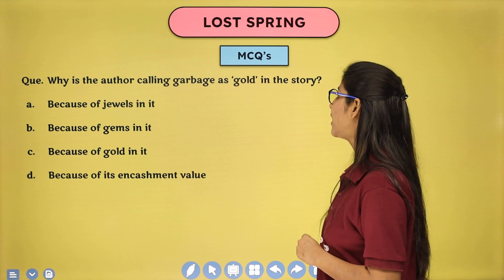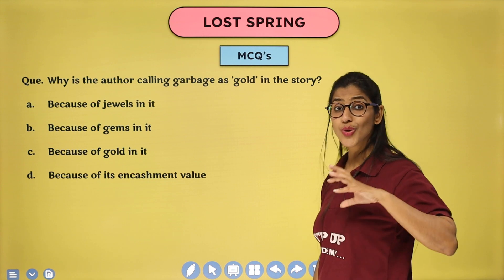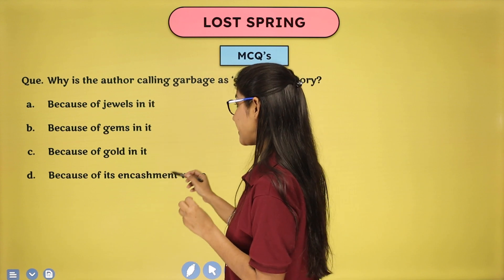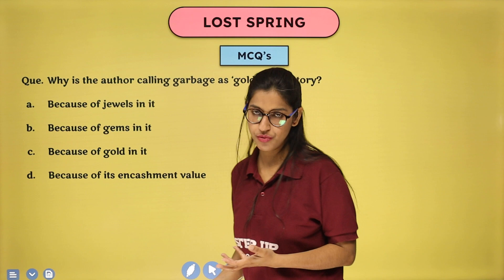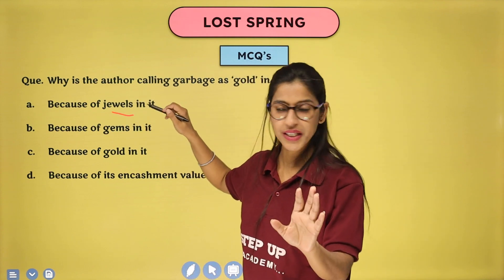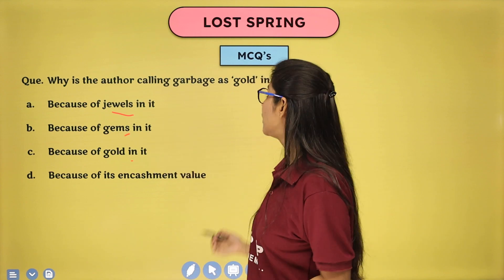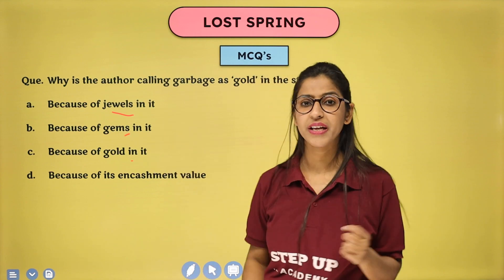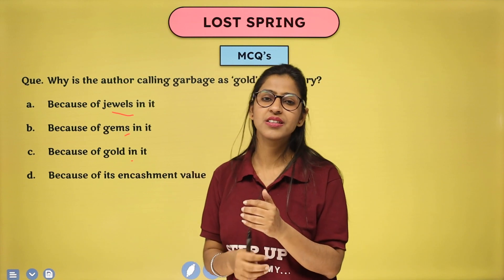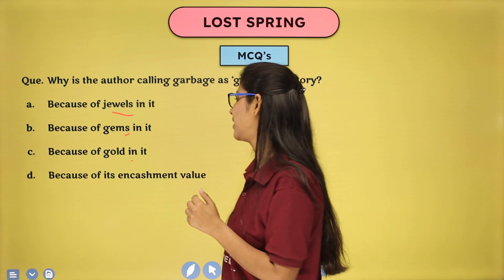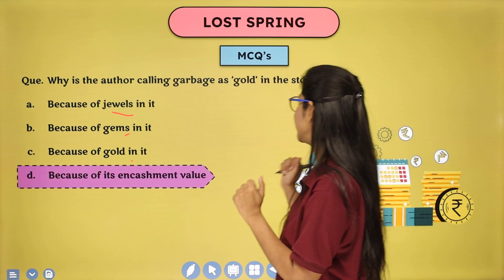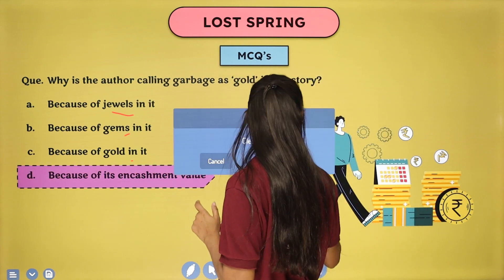Why is the author calling garbage 'gold' in the story? Options: because of jewels/gems, or because of its encashment value. There were no jewels, gems, or gold in the garbage. Garbage is called gold because of its encashment value — the money they got from it allowed them to fulfill some of their basic needs. So because of its encashment value, they considered garbage as gold.